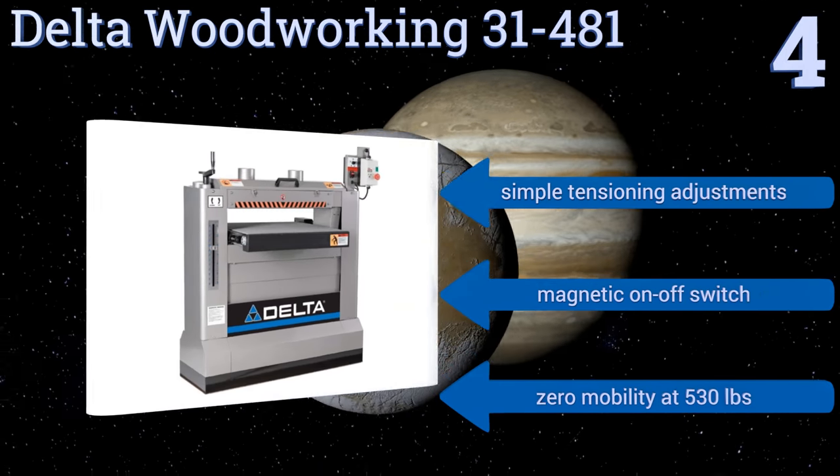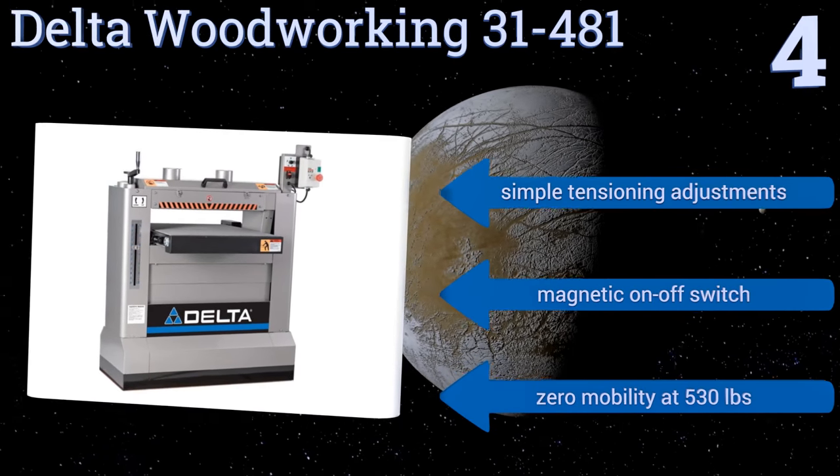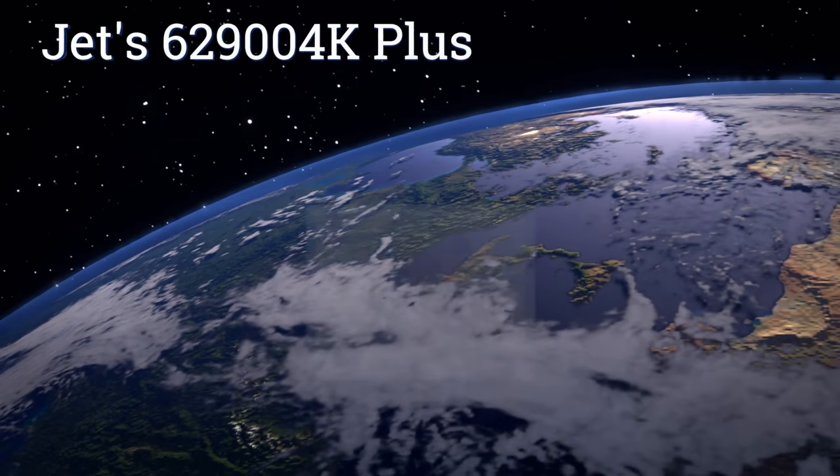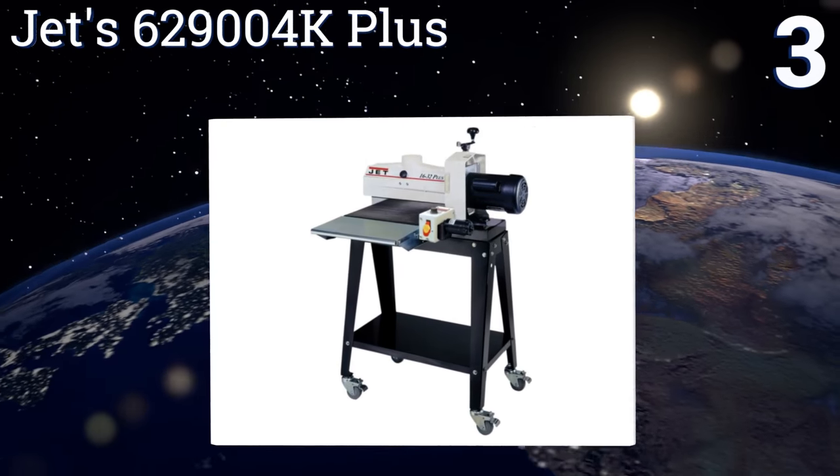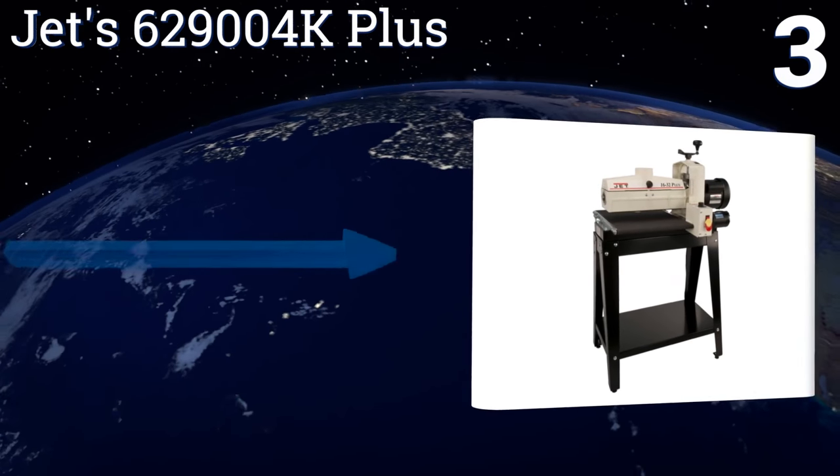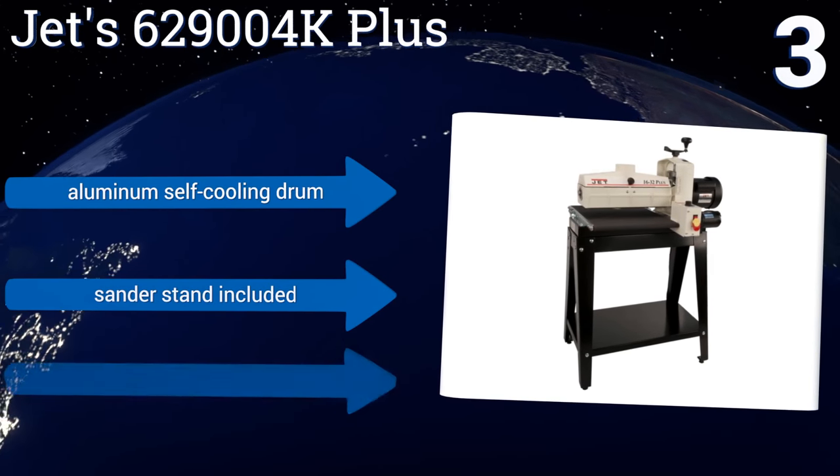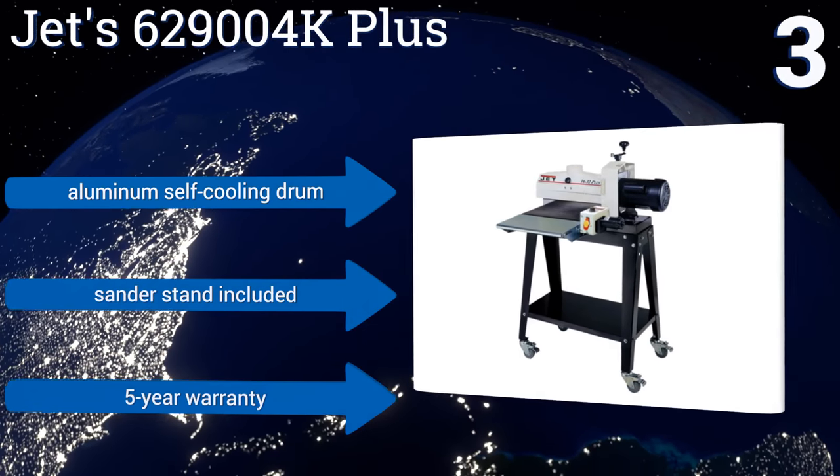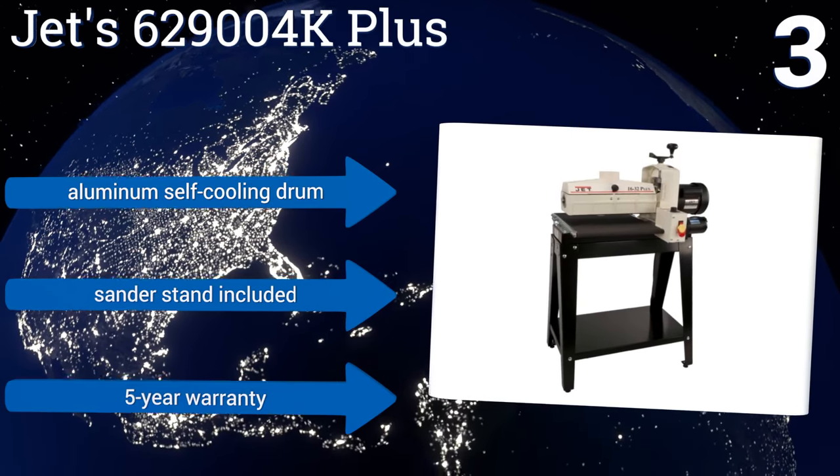However, at 530 pounds, it offers zero mobility. Nearing the top of our list at number three, Jet 629004K Plus can sand stock up to 32 inches wide with a five-inch diameter drum, making it ideal for wider jobs. Its ball bearings are sealed and permanently lubricated to ensure a long and easy operating life, and its height and pressure adjustments virtually eliminate snipe. It comes with an aluminum self-cooling drum, a sander stand, and a five-year warranty.